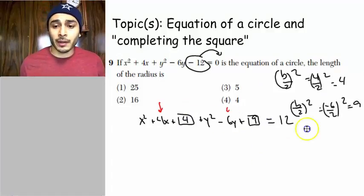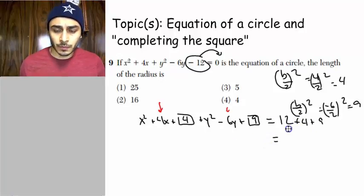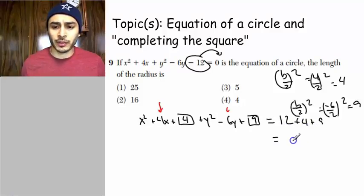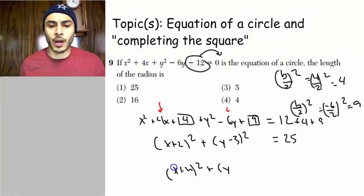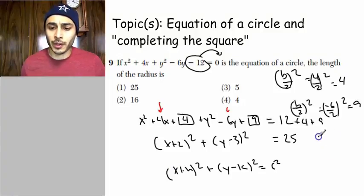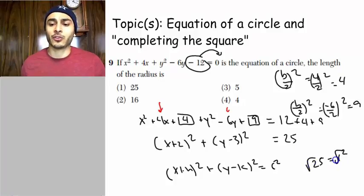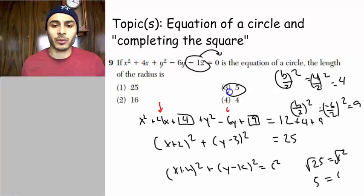Now you added 4 and 9 to the left side of the equation. You got to do the same thing on the right. So we got 12 plus 4 plus 9. 12 plus 4 is 16. 16 plus 9 is 25. And then if we factor this, we're going to get (x + 2)² and (y - 3)² equals 25. The equation of a circle is (x + h)² plus (y - k)² equals r². So that means that 25 equals r². If you want the radius, you're going to have to square root that. 5 is equal to the radius.